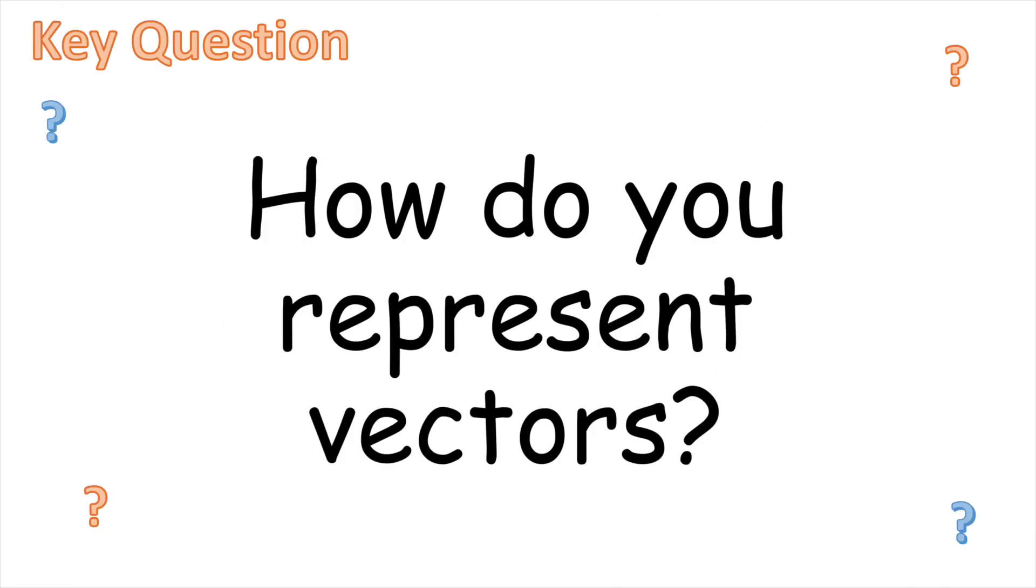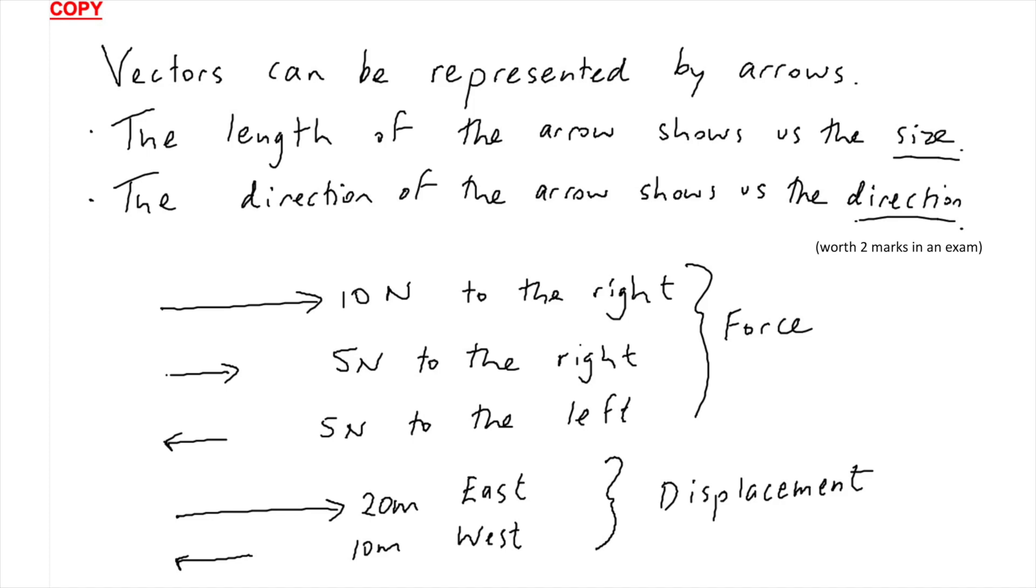How do you represent vectors? Easy, with arrows. Vectors can be represented by arrows. The length of the arrow shows us the size, and the direction of the arrow shows us the direction, obviously. And you'll get two marks for seeing that in an exam.